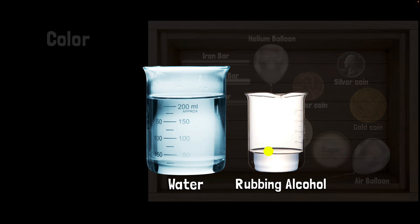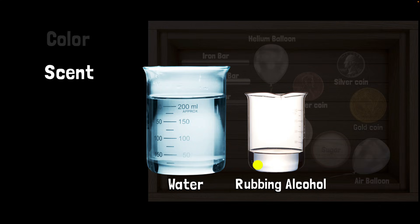What if you wanted to instruct your brother to get the rubbing alcohol, for example? How would you differentiate between these two? Well, you can ask your brother to smell it. The water does not have any smell. The rubbing alcohol has some kind of a medicinal smell. So you could say, 'Hey, get me the one that has the medicinal smell.' So in this case, you're going to use the scent to differentiate between these two.